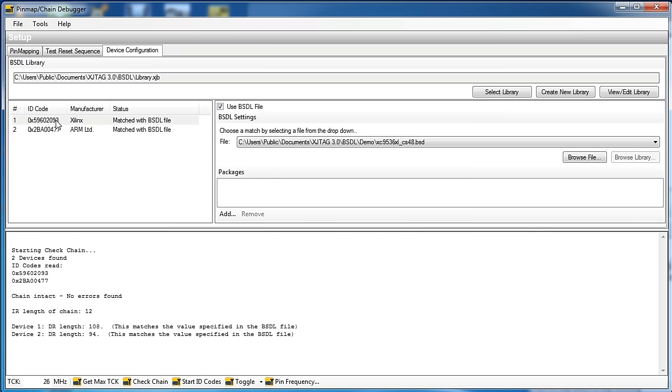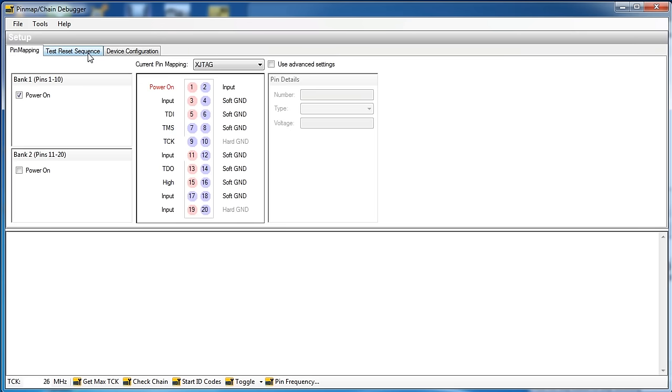But if we go over to device configuration over here, bingo, it has found them. Look, the Xilinx one, there we go. It's matched it, Xilinx and an ARM. There we go. And the Xilinx is an XC9536. It's automatically found that. And it's automatically found the ARM processor as an LM3S300. Awesome. And what we can do now is we can go up into tools and then view JTAG data. And we can check that chain again.